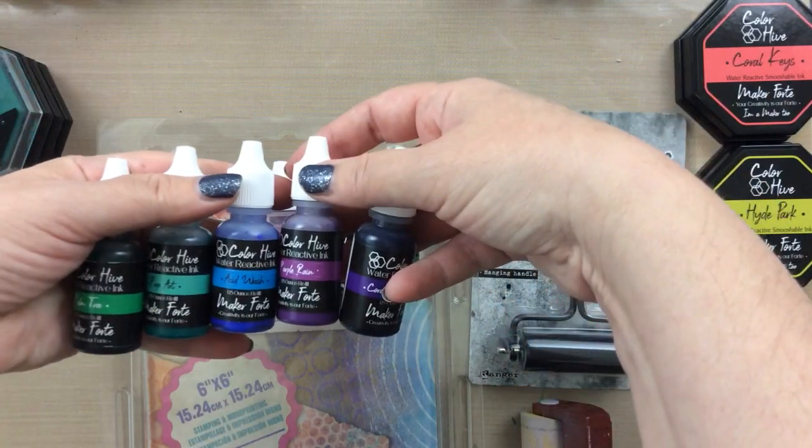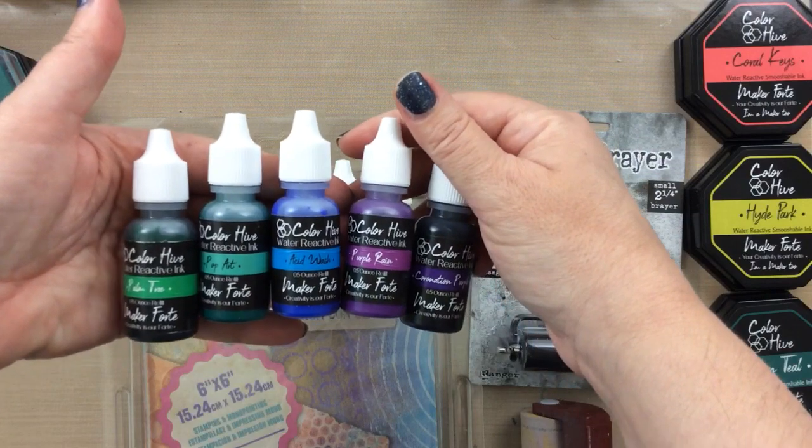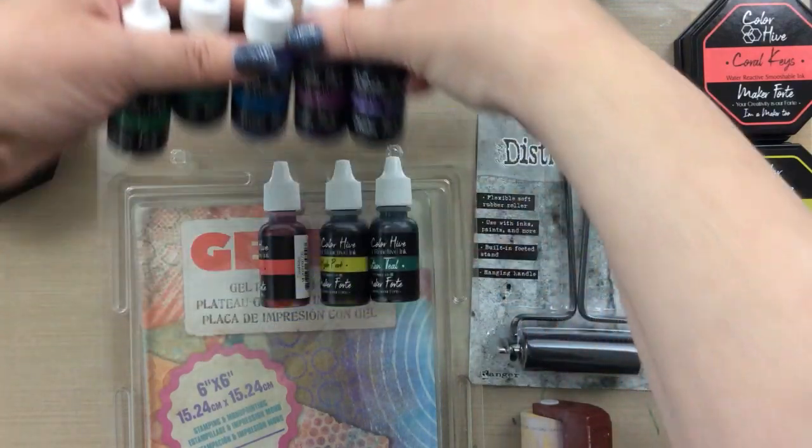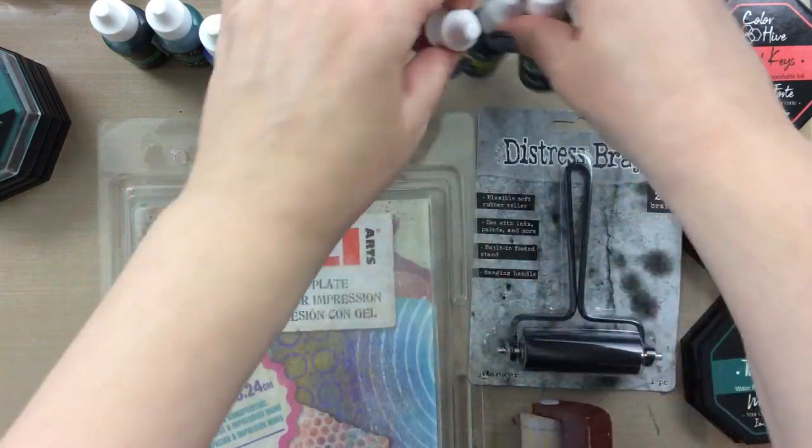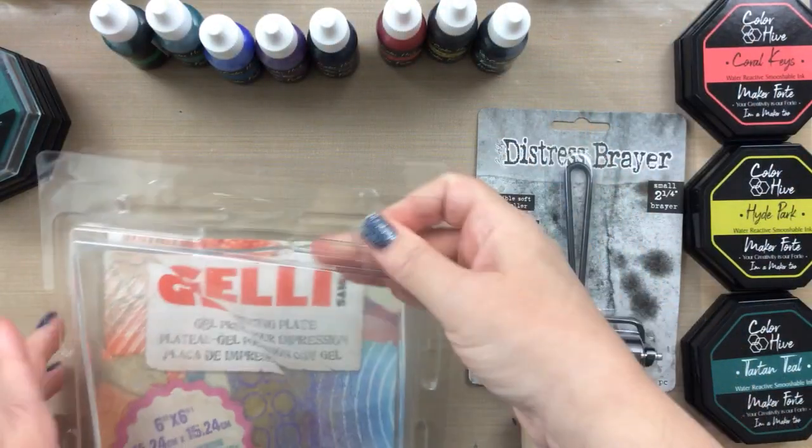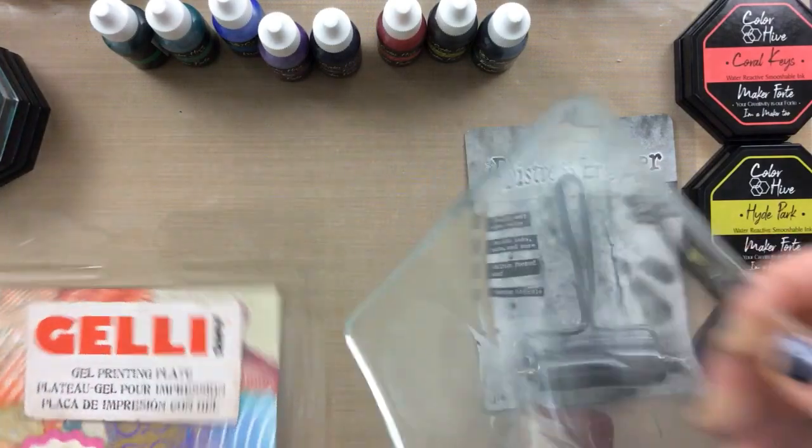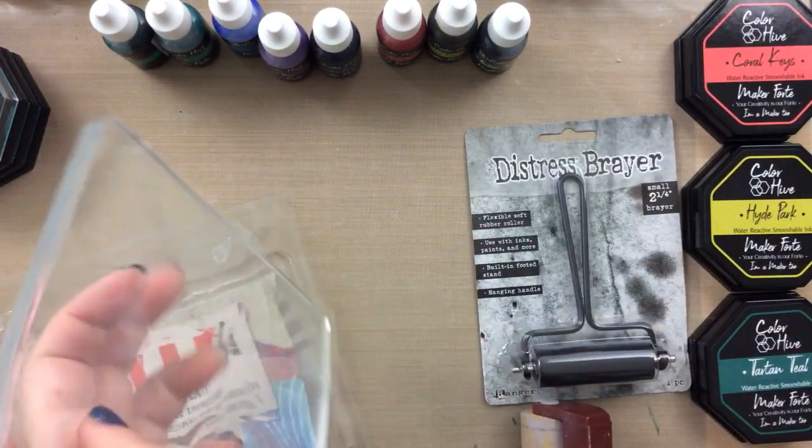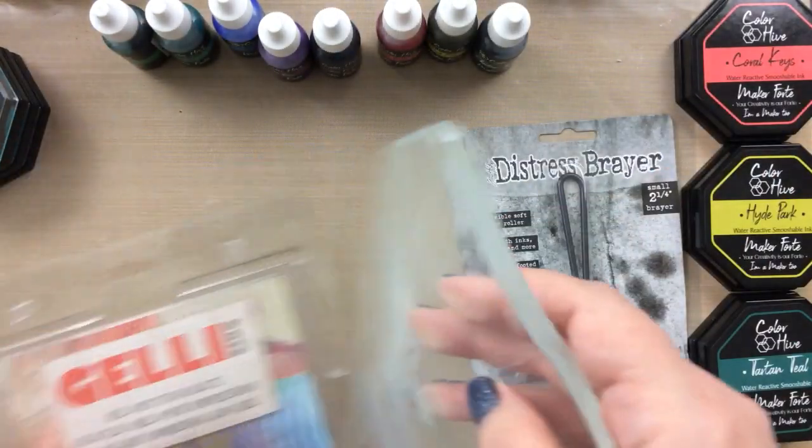And then some of my other favorites in the neon inks as well as some greens and blues here. And we're going to use most of these today for our projects. I'm going to be making two tags that you can recreate and put on your ring of tags. So hopefully you have your tags ready and your gel plate ready.